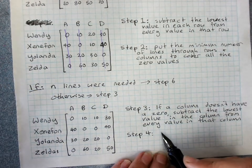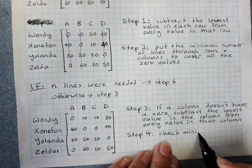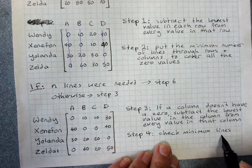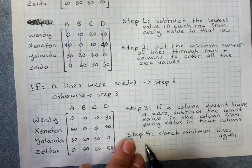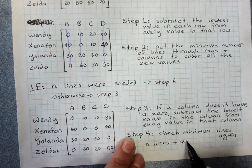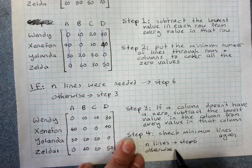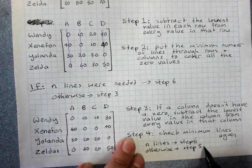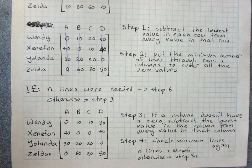Step four, check the minimum lines again. If you needed n lines, great, we go to step six. Otherwise, step five. Step five are acres. Step five is a little bit complicated. So we'll check our minimum lines.